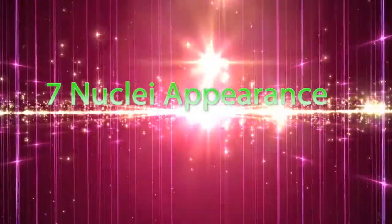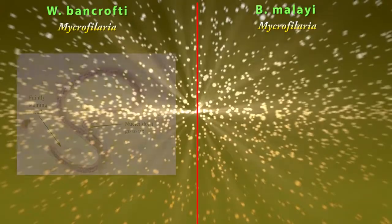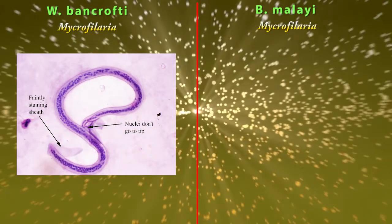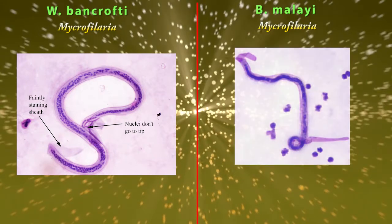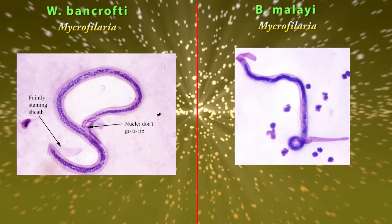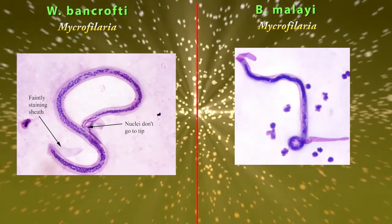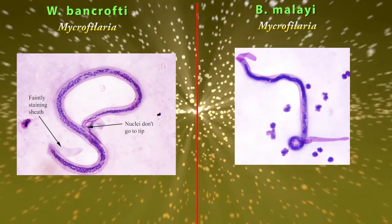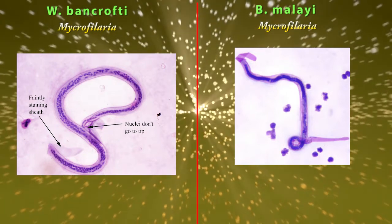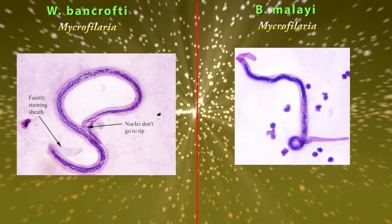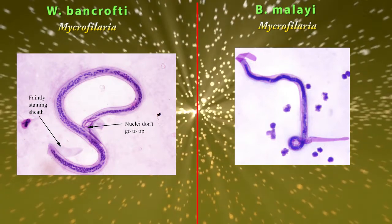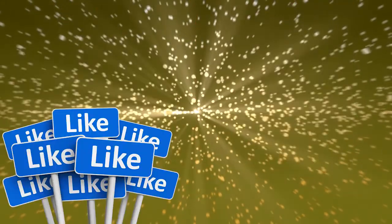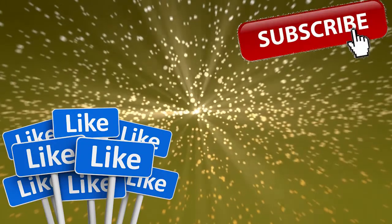Difference number seven: nuclei appearance. In Wuchereria bancrofti we can see separate nuclei — we can even count them. But in Brugia malayi we can see overlapping nuclei. This is also a really good clue to differentiate Wuchereria bancrofti from Brugia malayi.